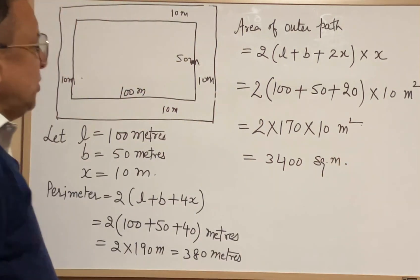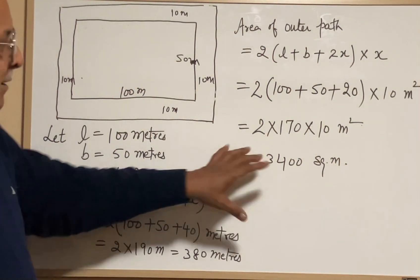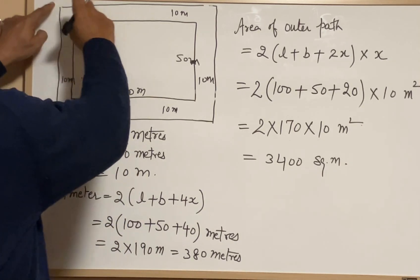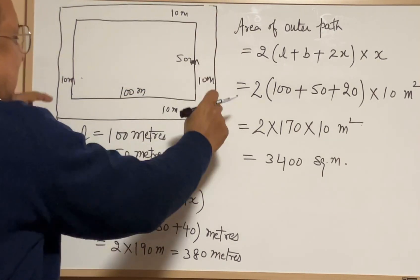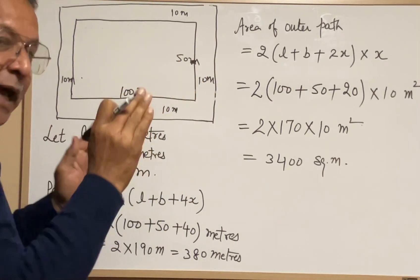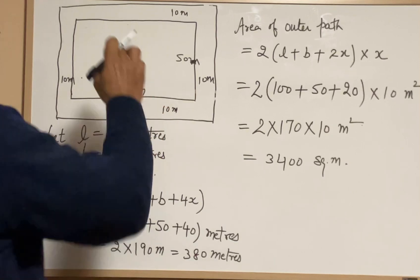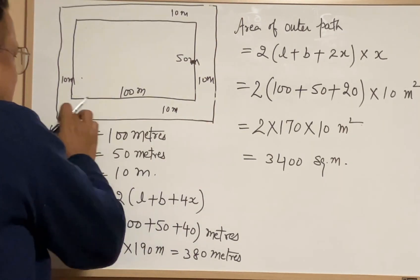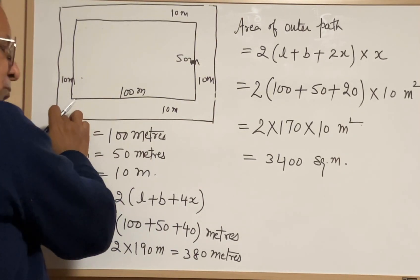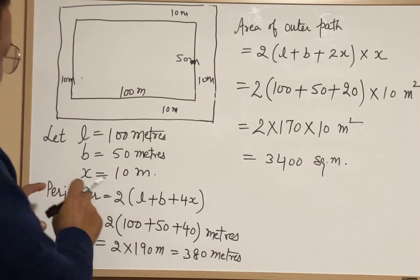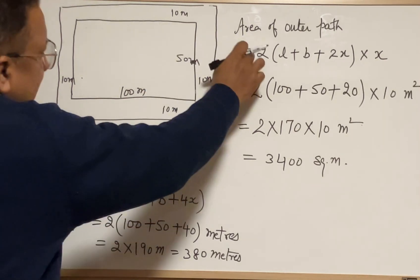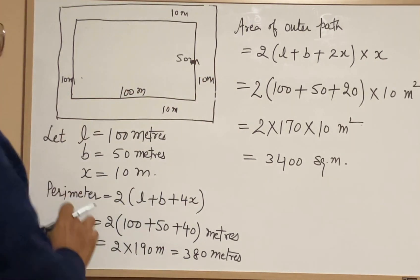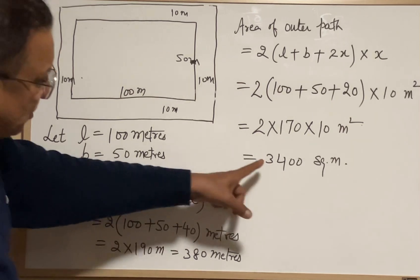This is the special formula for finding the perimeter — that is, the outer perimeter — of the rectangular figure, and also the area of the outer path of this figure.